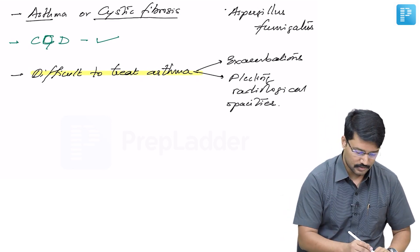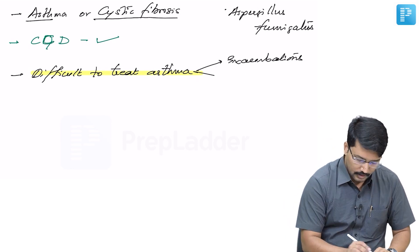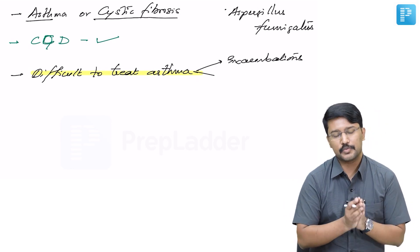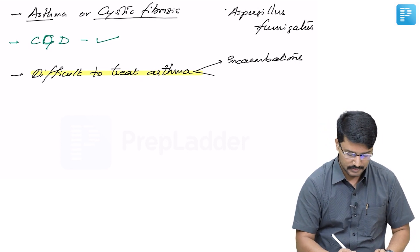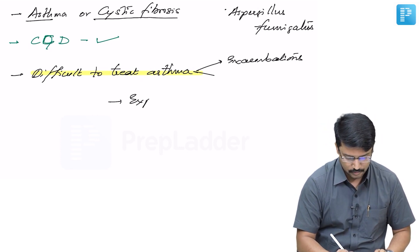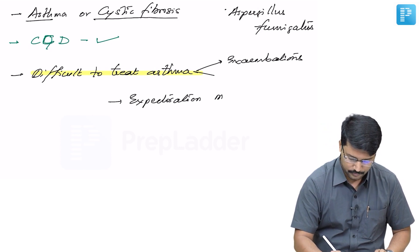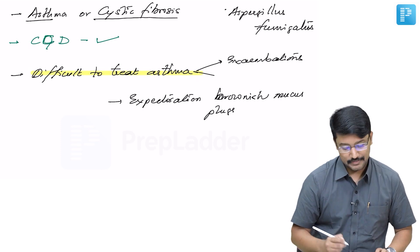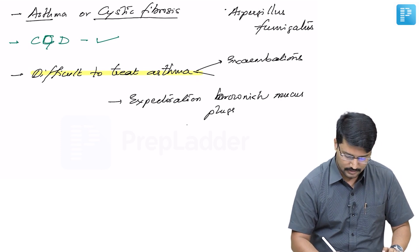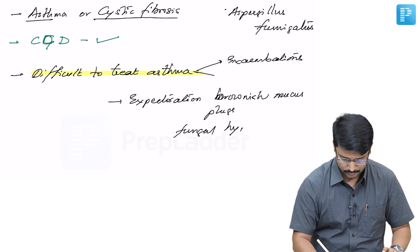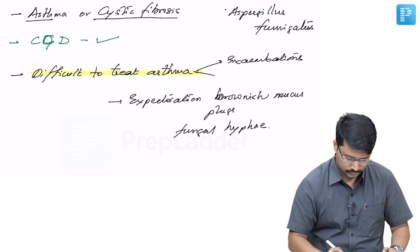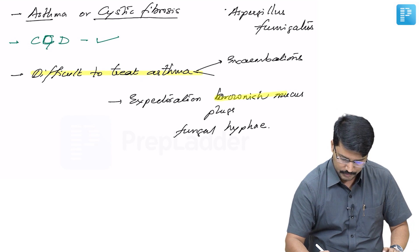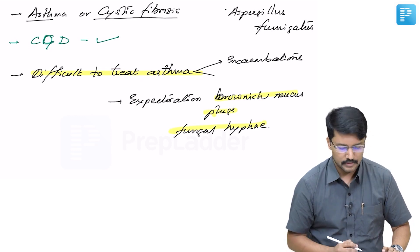Another pointer to suspect allergic bronchopulmonary aspergillosis is that these patients present with expectoration of brownish mucus plugs containing fungal hyphae.